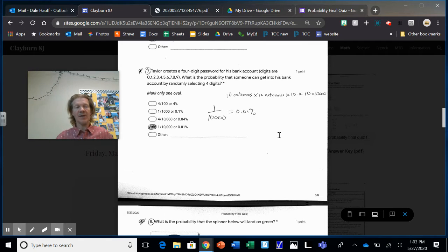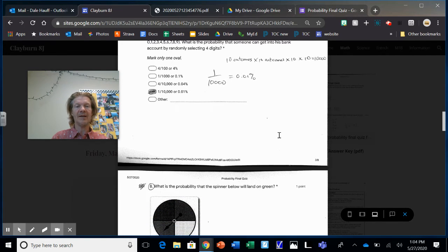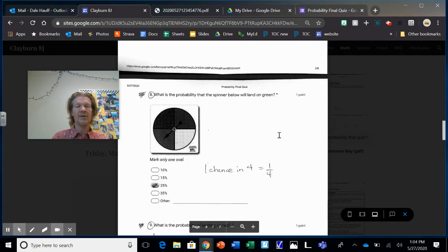Number seven. Kids had questions about this. Students had questions about this yesterday, the day before. Taylor creates four digit password for his bank accounts. Digits are zero to nine. So there's 10 digits, right? Instead of one to 10, it's zero to nine. So what's the probability that someone will hack this? Well, there's 10 outcomes in the first number, 10 on the second, 10 on the third, 10 on the fourth. So 10 times 10 times 10 times 10 is 10,000. So there's 10,000 different combinations. Only one is the right one. So one out of 10,000 or 0.01 percent. So I think his password is pretty protected. Not likely to guess that. And that's only a four digit one.